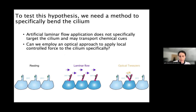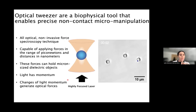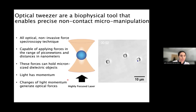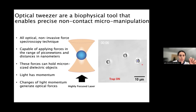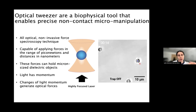That's why we decided to use optical tweezers. Optical tweezers are a biophysical tool that enables precise non-contact micromanipulation — purely optical, relying on light. It's essentially a very focused laser beam capable of applying forces in the range of piconewtons over distances of nanometers, and it can hold a micron-sized object. It relies on the fact that light has momentum, and changes in light momentum generate optical forces. When the laser is off, beads drift by Brownian motion; when the trap is on, the bead gets stuck and moves with the stage.